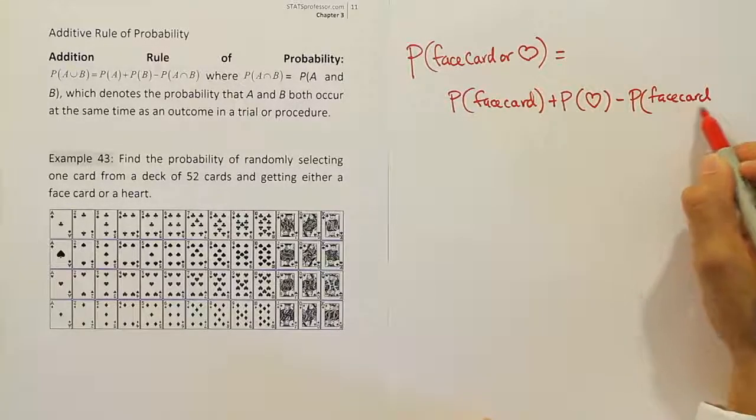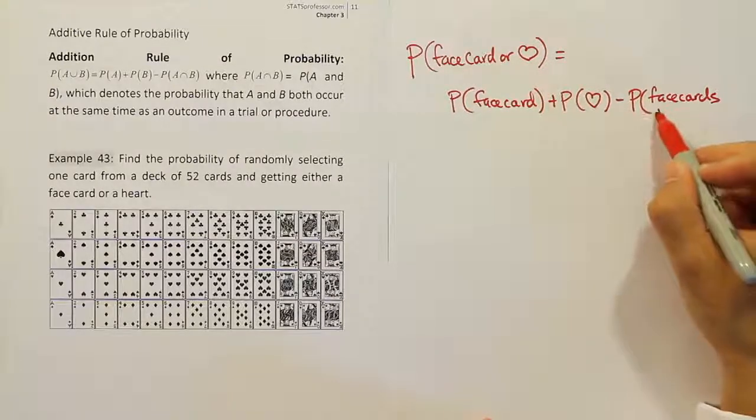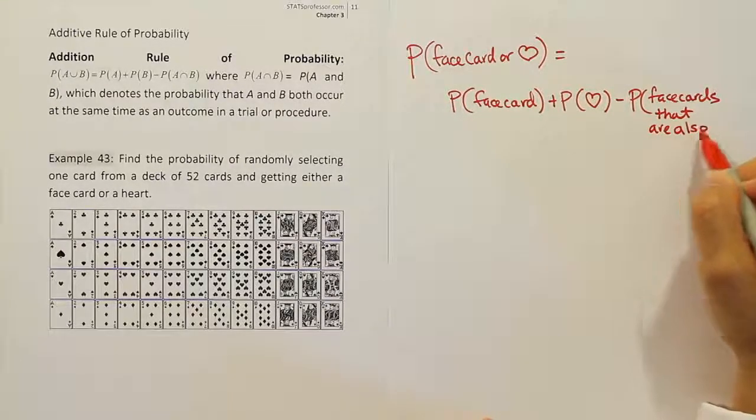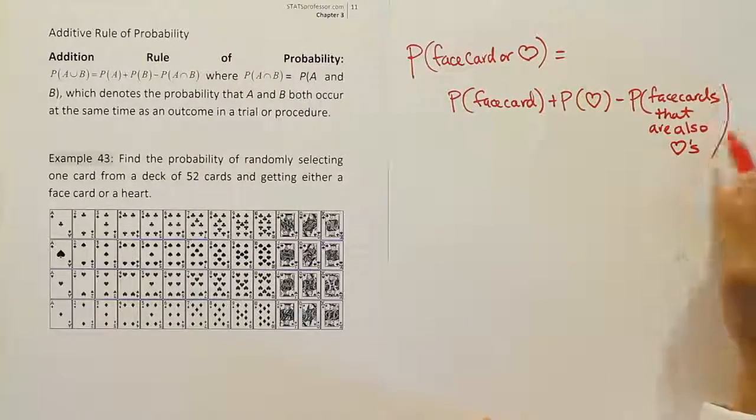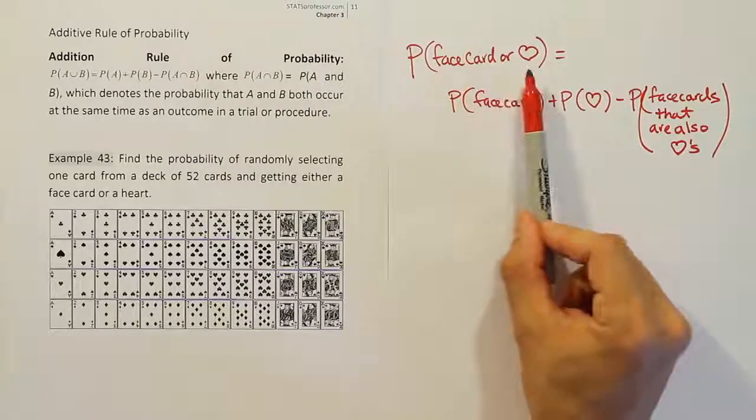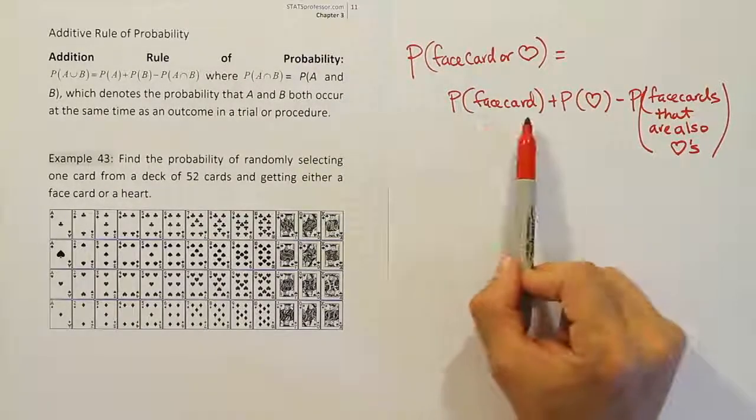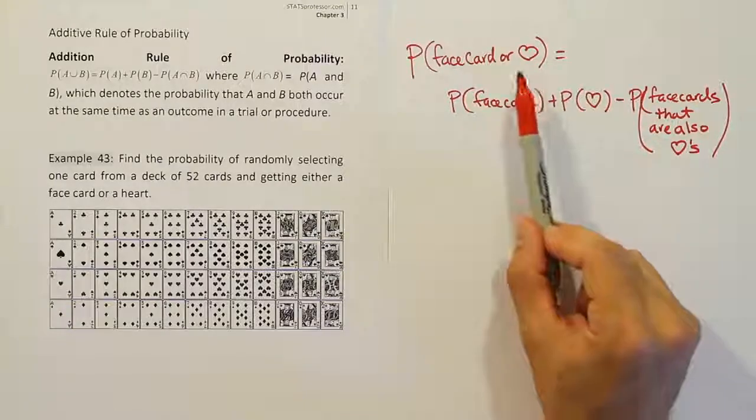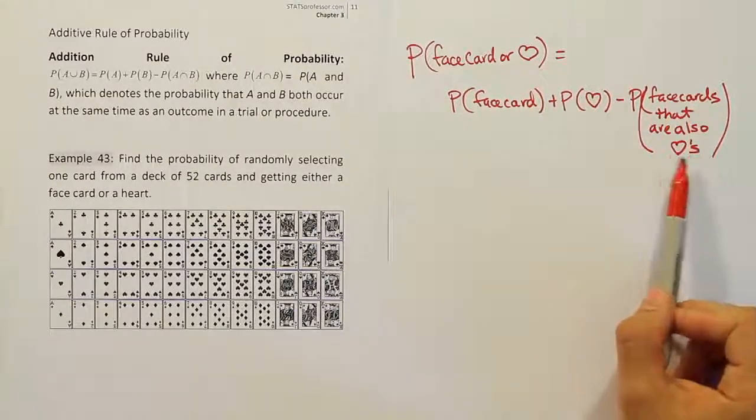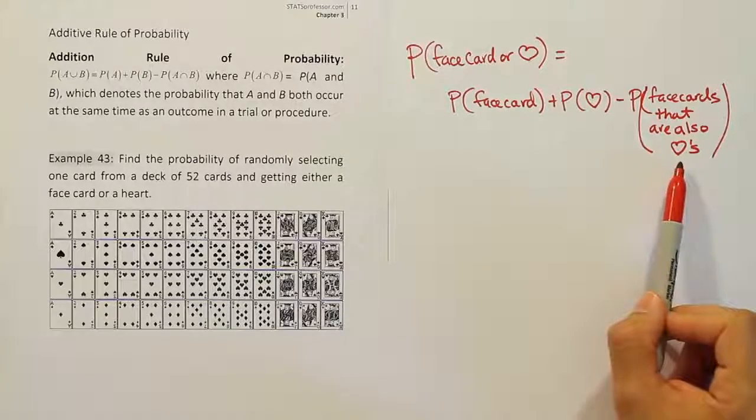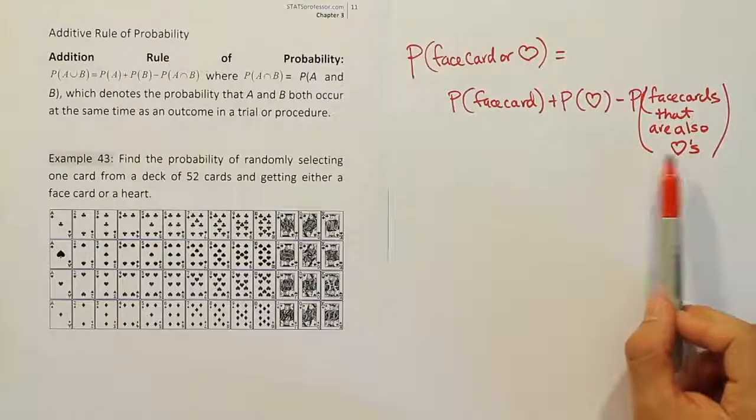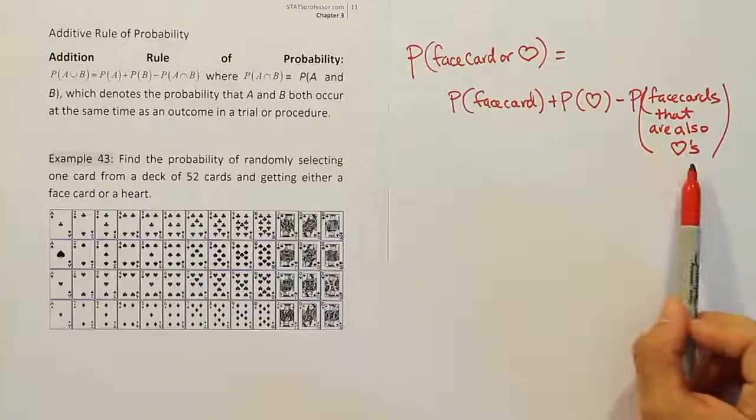But I'm going to write it this way. Face card, instead of intersection heart, I'm going to say face cards that are also hearts. Because that's what this is really asking for. So probability of face card or heart is broken down this way. It's the first thing, probability of a face card, plus the probability of the second thing, probability of heart, minus the probability that you would get both of those things at the same time in one card. Remember, you're only taking one card, so these have to appear at the same time with just one card. That means it's a face card that's also a heart.